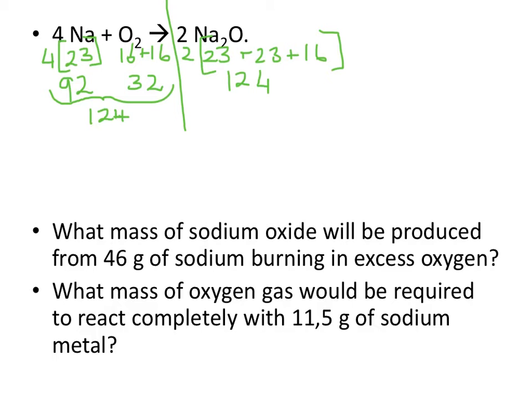Now they ask me what mass of sodium oxide would be produced from 46 grams of sodium. So I look at 92 and 46, and I see that 46 is half of 92. 92 grams of sodium would have produced 124 grams of sodium oxide. So I now go half of 92 would produce 62 grams of sodium oxide.